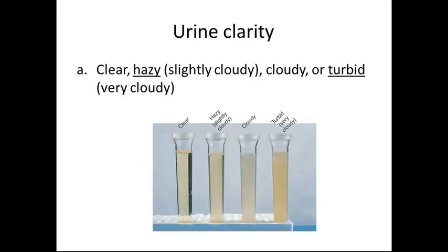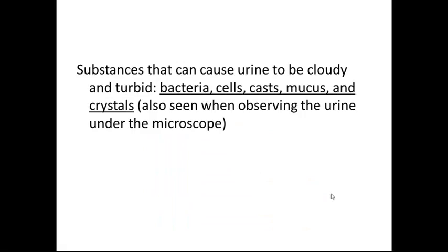Urine clarity has four categories: clear, hazy, cloudy, and turbid or very cloudy. Substances that can cause urine to be cloudy or turbid include bacteria, cells, casts, mucus, and crystals — also seen when observing urine under the microscope.